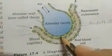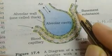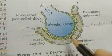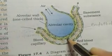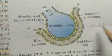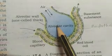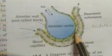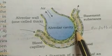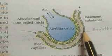And in between these two, there is the basement membrane. So, there are three layers: squamous epithelium of alveoli, endothelium of blood vessel, and the basement membrane of squamous epithelium of alveoli and blood vessel.